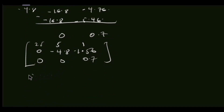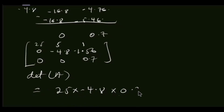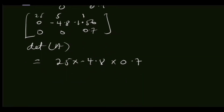At this point, the determinant of A is simply equal to 25 times negative 4.8 times 0.7, and I'm getting negative 84 as the answer for my determinant. Thank you for being with me in this video. Please subscribe to support, and don't forget to like and share.